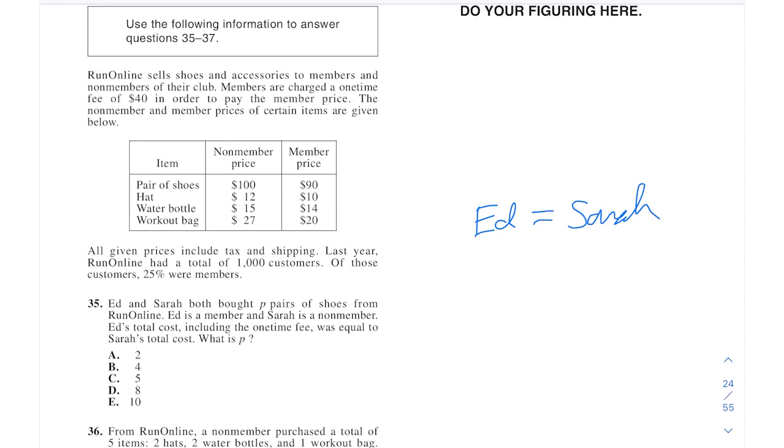So Ed equals Sarah on this. Let's see how we want to set this up. It says members pay 40 bucks. And then they get the member pricing. Okay. So they bought 10 pairs of shoes. Or no, sorry. P pairs of shoes. We have to find P. Okay. So for Ed as the member, it's going to be 40 plus 90 dollars per pair of shoes for that member. So 90 times a certain number of pair of shoes. And that's got to equal Sarah's, which is just going to be 100P. She doesn't have to pay the membership fee. So that's 10P equals 40. P equals 4.